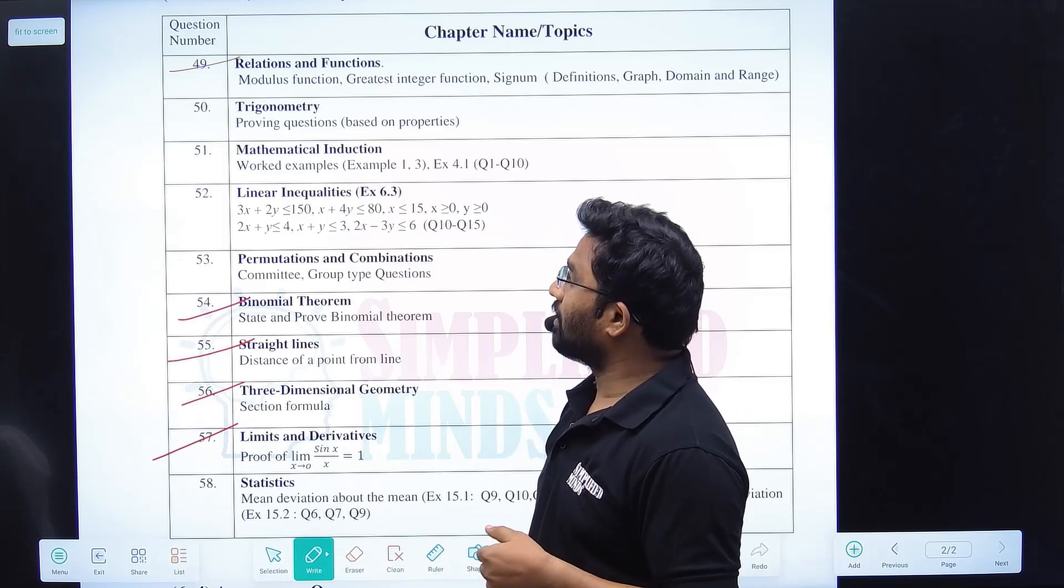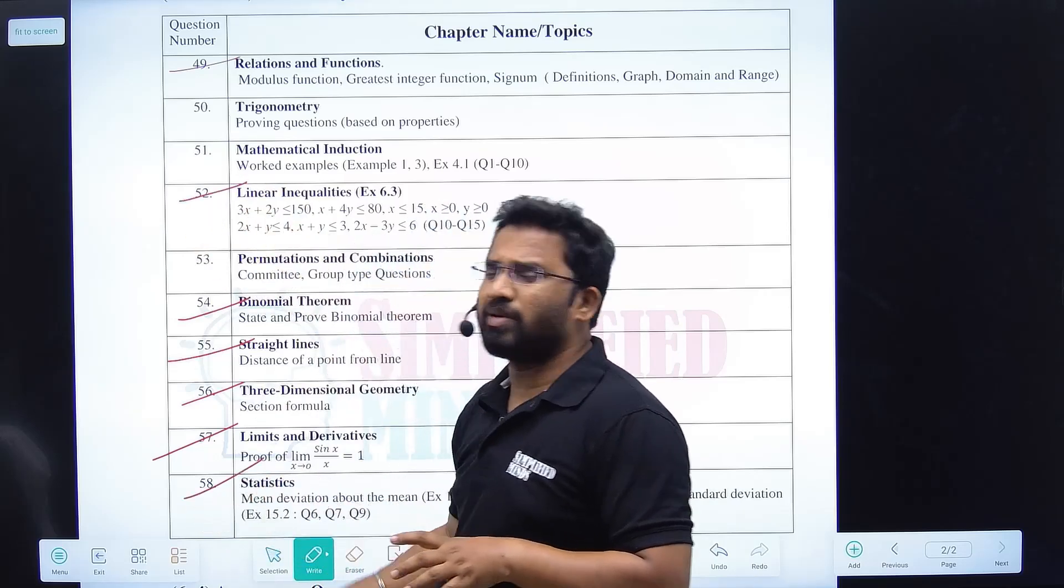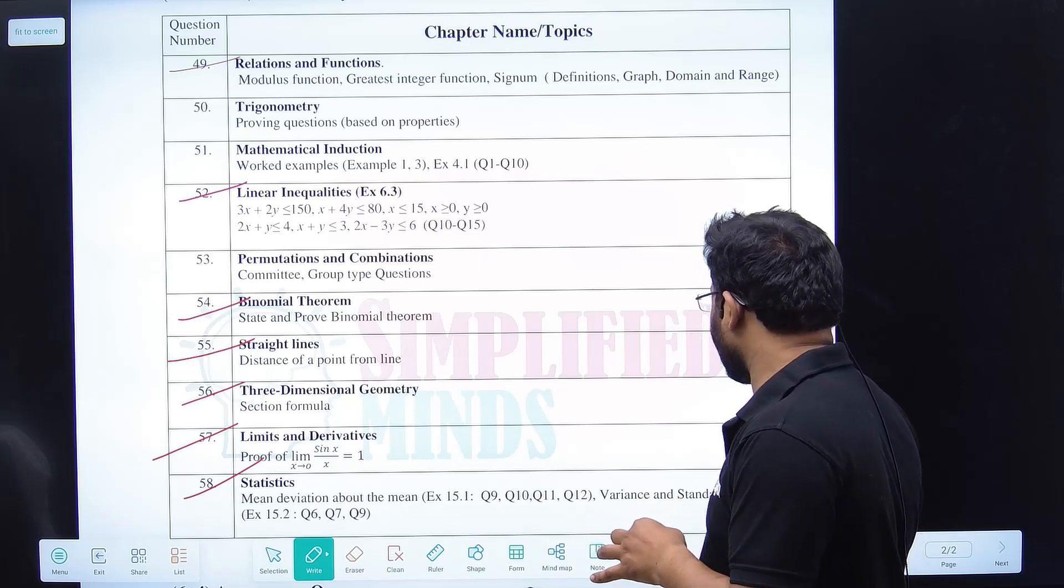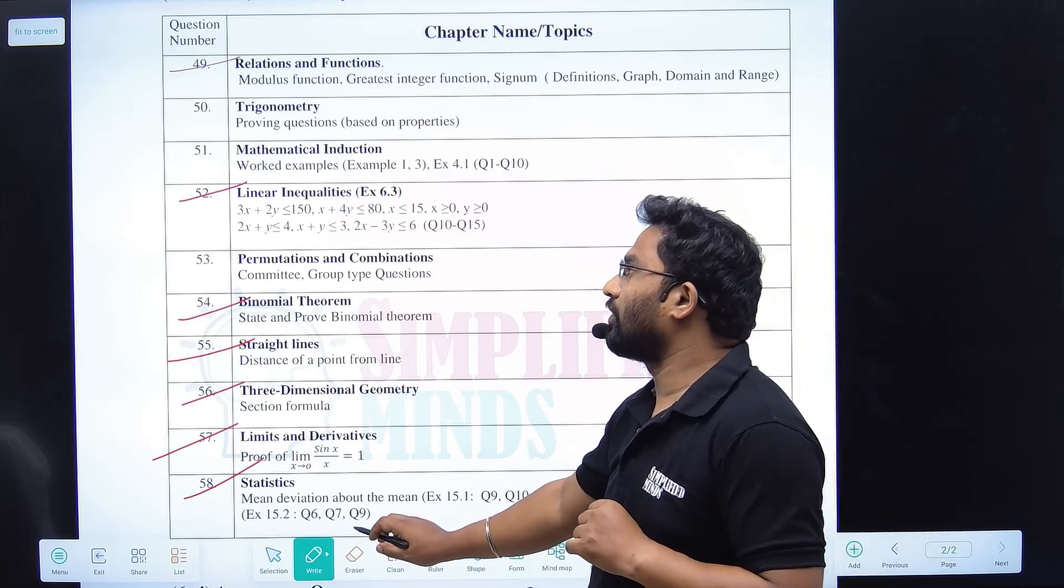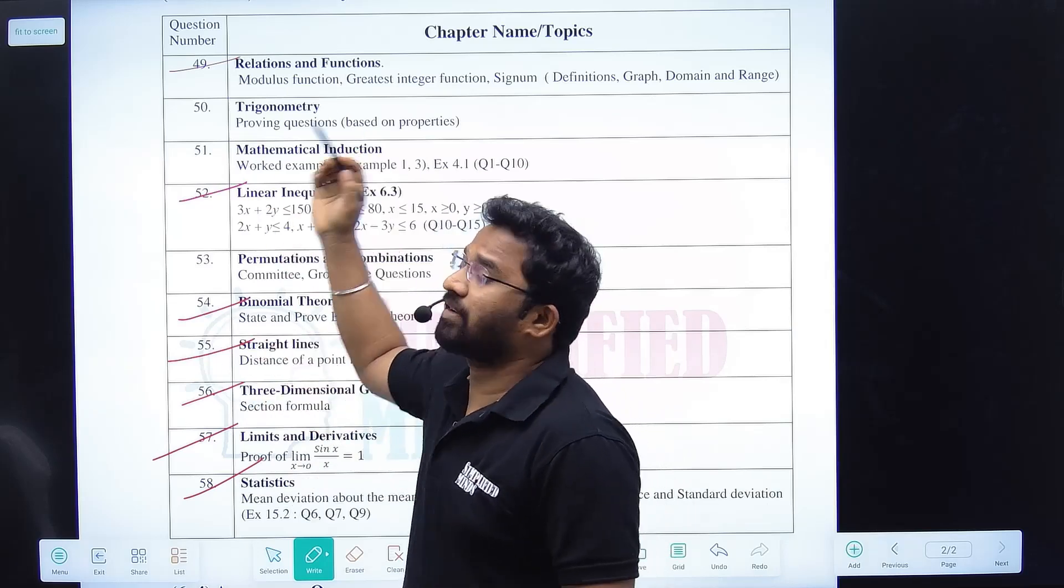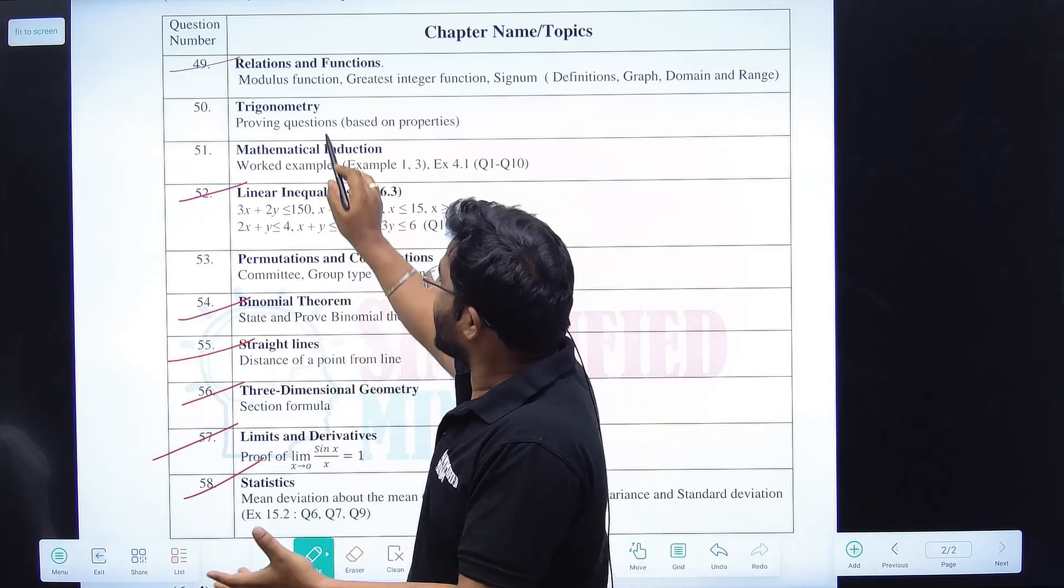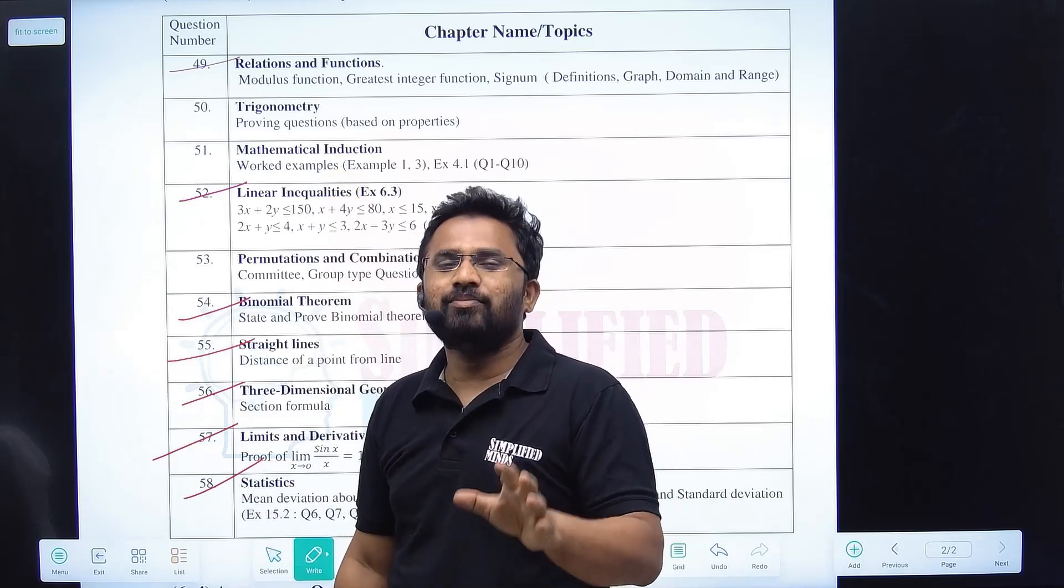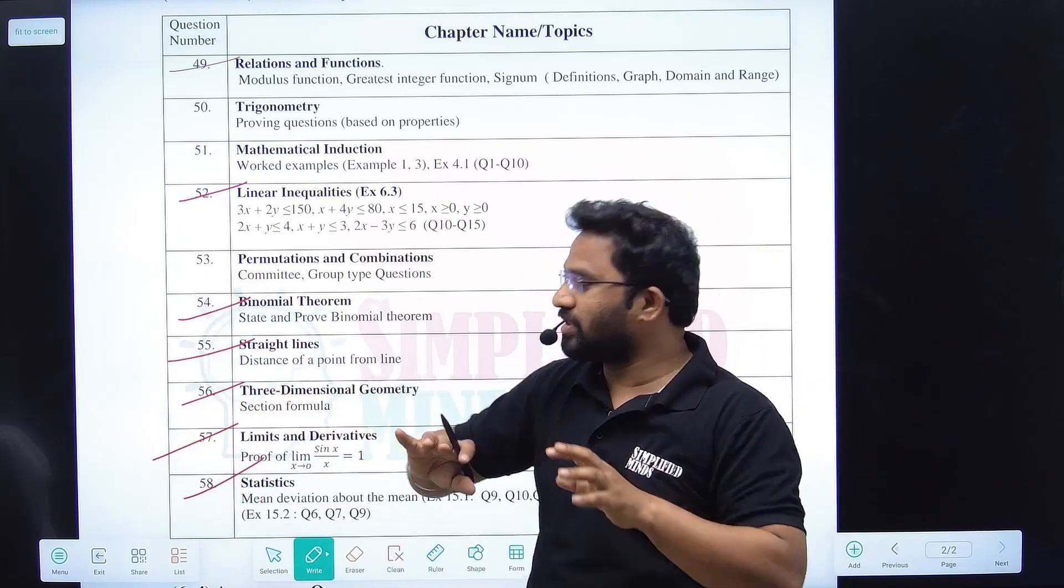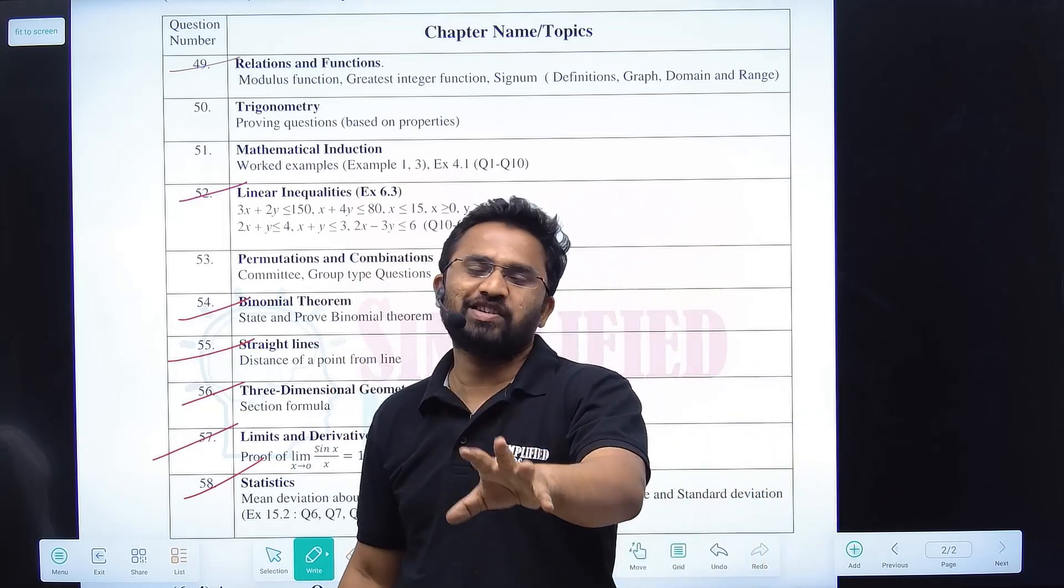If you read these five, at least four marks you'll get. It's very easy. This is very easy - linear inequality solving. Statistics is very easy, same question - mean deviation about the mean questions. Variance and standard deviation questions are given. I've given question numbers for that also. Almost one, two, three, four, five, six, seven questions are very easy. Other questions are also easy. It's easy to score. You just have to do these many questions.